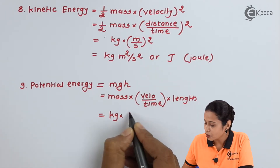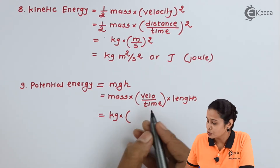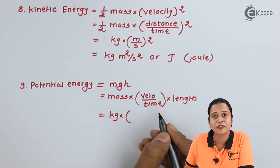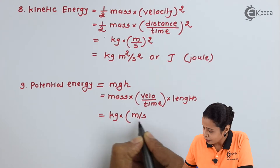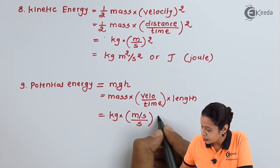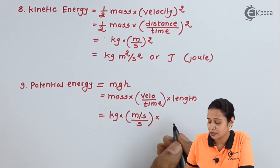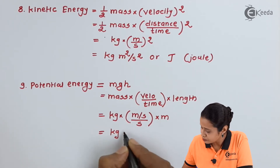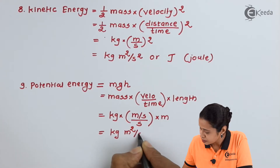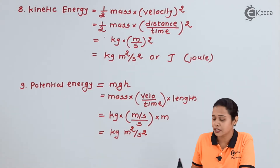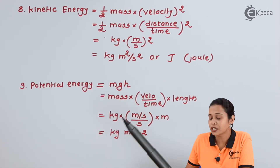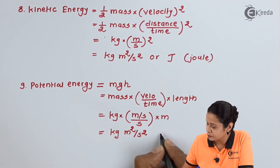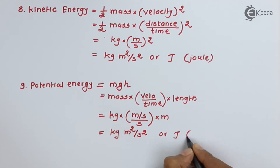The unit of velocity is distance per unit time, so meter per second. Combined with the time in the denominator, we get meter per second squared. Multiplied by mass in kg and height in meters, the combined unit is kg meter square per second square. This is the same as kinetic energy. Since it is also a form of energy, another unit is joules, denoted by capital J.